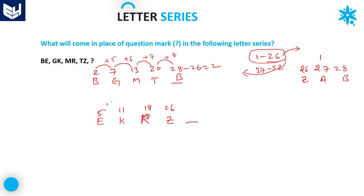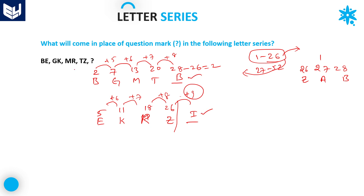The gaps for the second letters are: plus 6, plus 7, plus 8 — so the next must be plus 9. 26 plus 9 equals 35. Since 35 is greater than 26, subtract 26: 35 minus 26 equals 9, and 9 corresponds to the letter I. Therefore the first letter is B and the second letter is I — the answer is BI. I hope you enjoyed the session, thank you very much for watching.